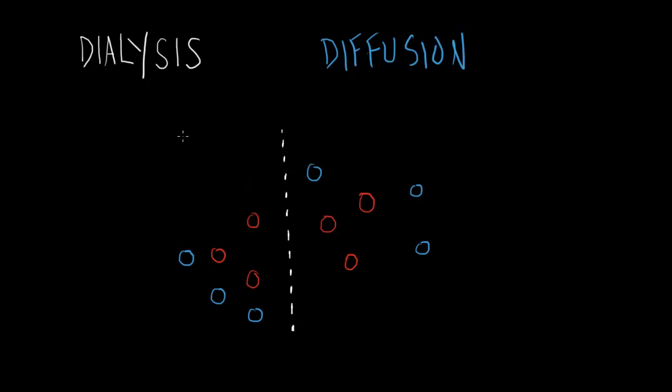Instead of having red and blue circles, we have something like potassium. So this is the blood side. This is the dialysate. And the blood, let's say our potassium is 7, very high, very dangerous. And the dialysate, our potassium is say 2.